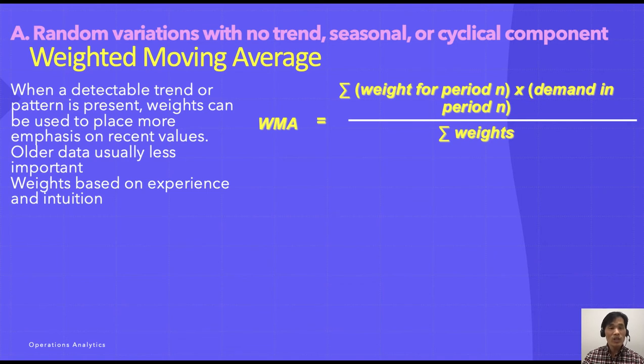The second method is weighted moving average. Simple moving average gives the same weights to the previous data. When you see that the previous period of data is more important and influencing factor, you can give more weights to the previous data. In that case, you can use weighted moving average.